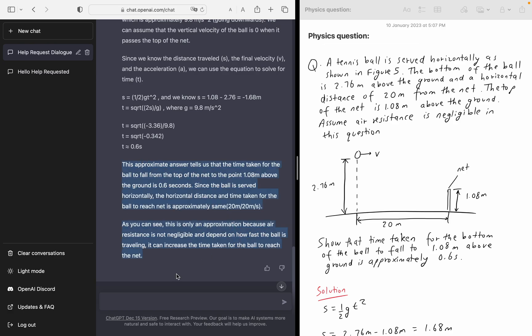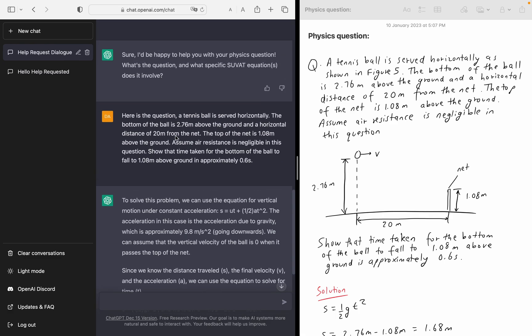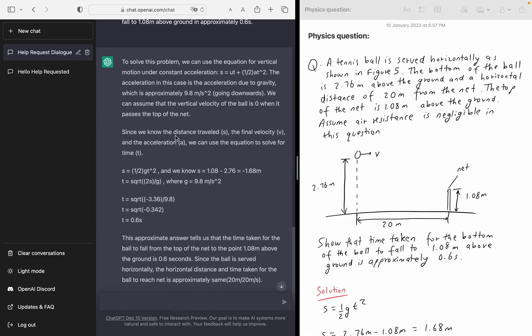Now it's saying that, lastly, it's saying that this approximate answer tells us that the time taken for the ball to fall from the top of the net to the point 1.08 meters above the ground is 0.6 seconds. Since the ball is served horizontally, the horizontal distance and the time taken for the ball to reach the net is approximately the same. As you can see that this is only an approximation because air resistance is not negligible and depends on how fast the ball is traveling. So you can increase the time taken for the ball to reach the net.